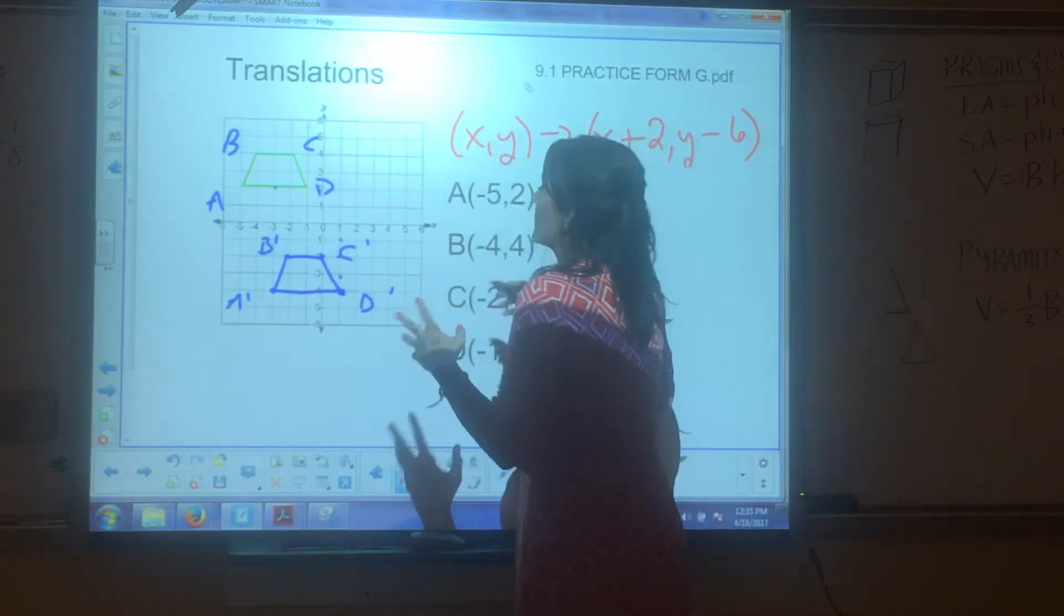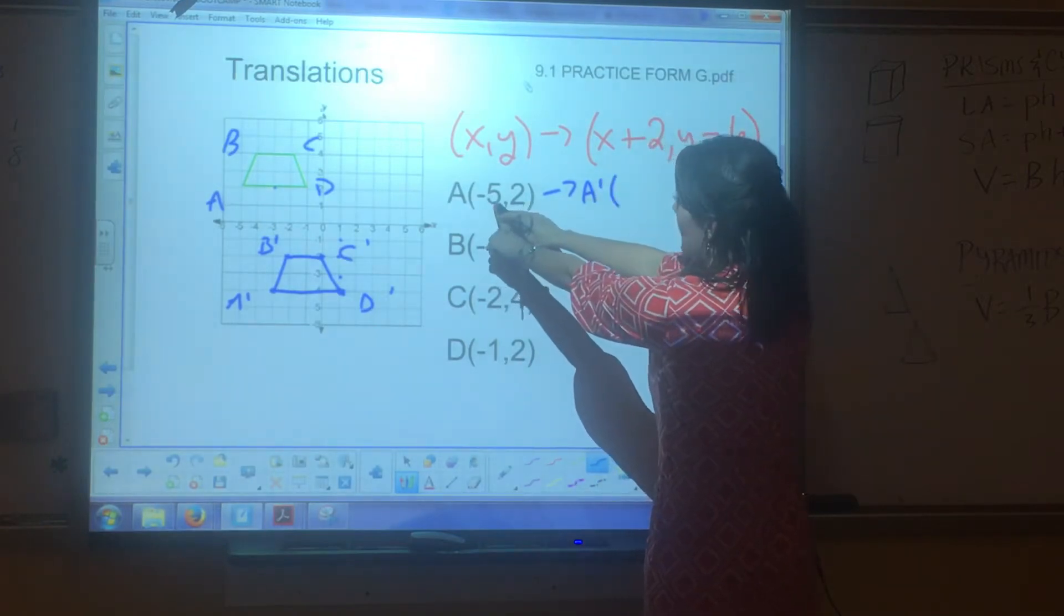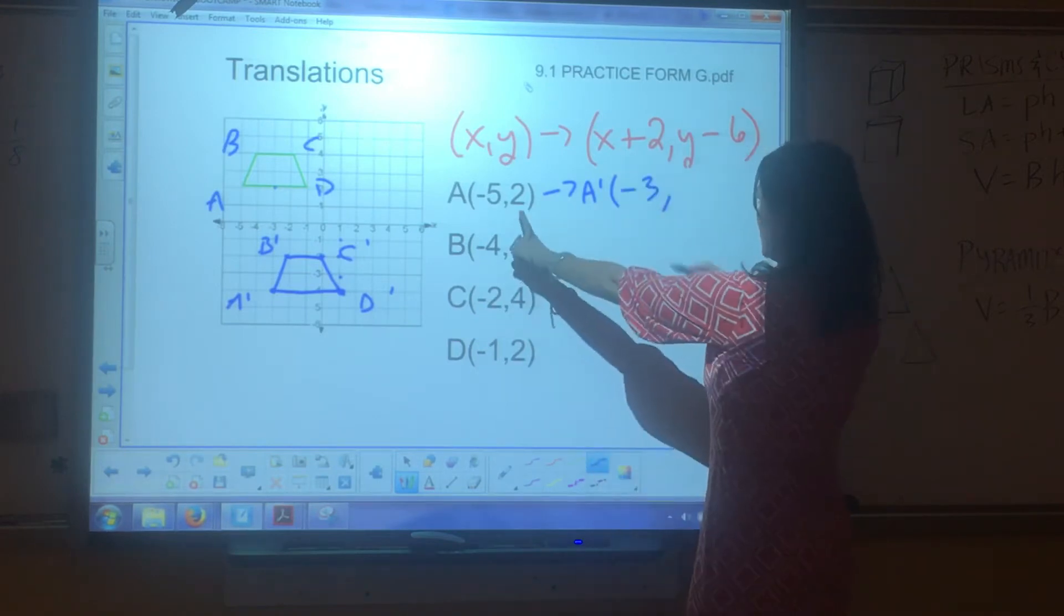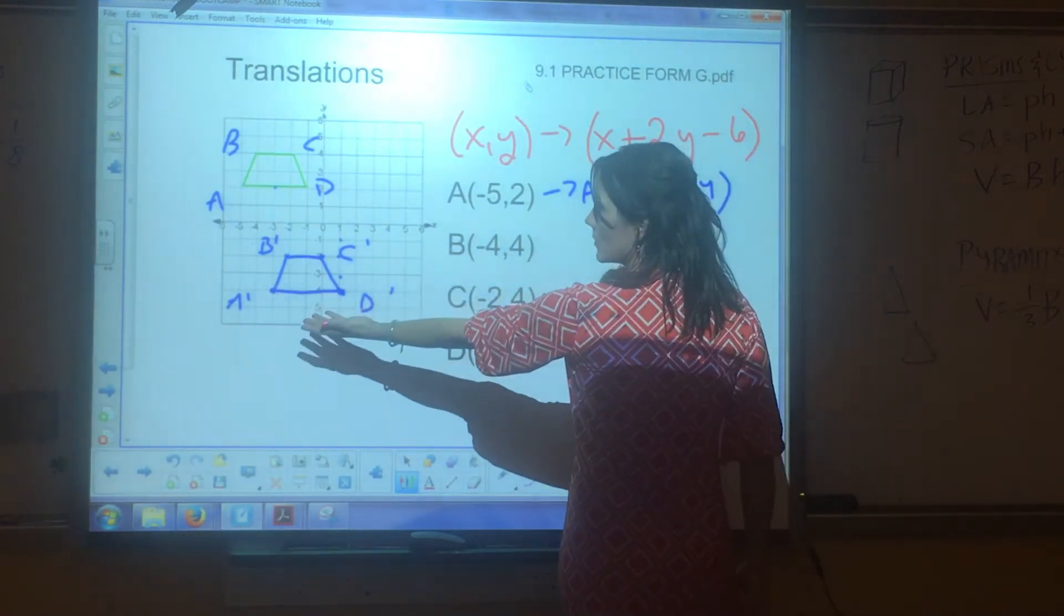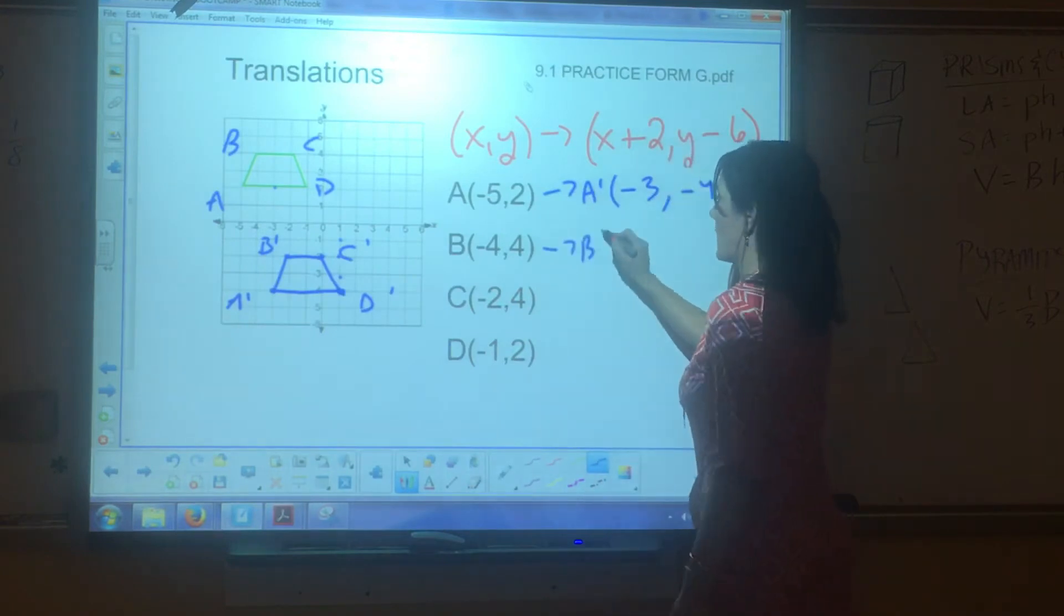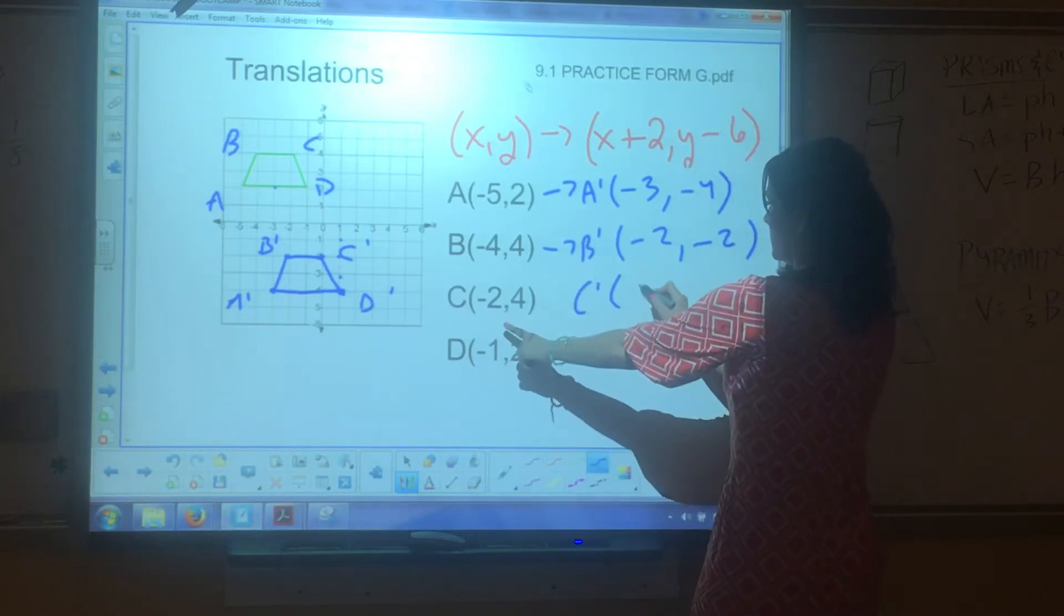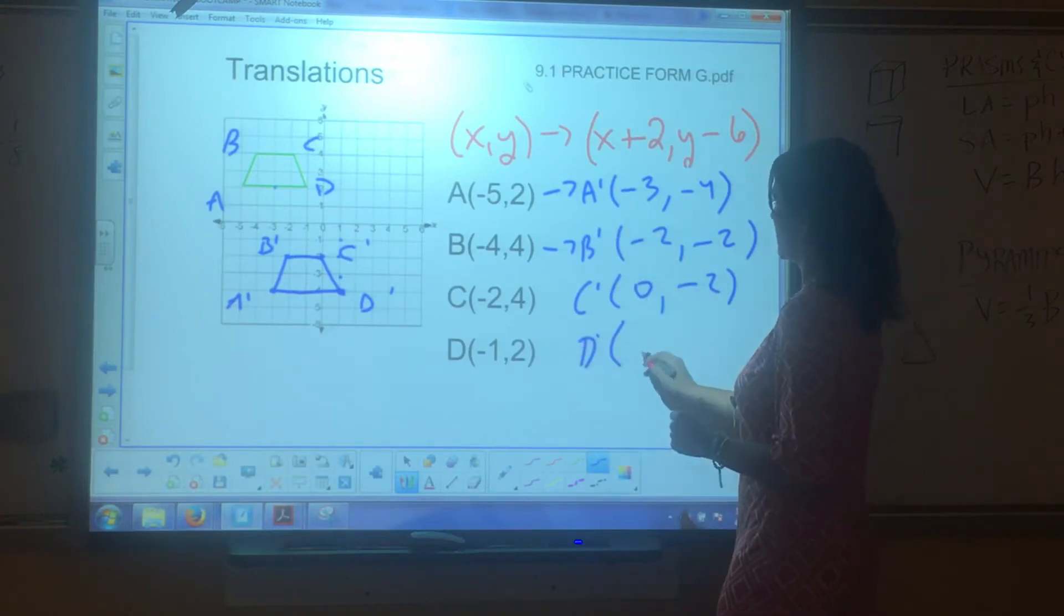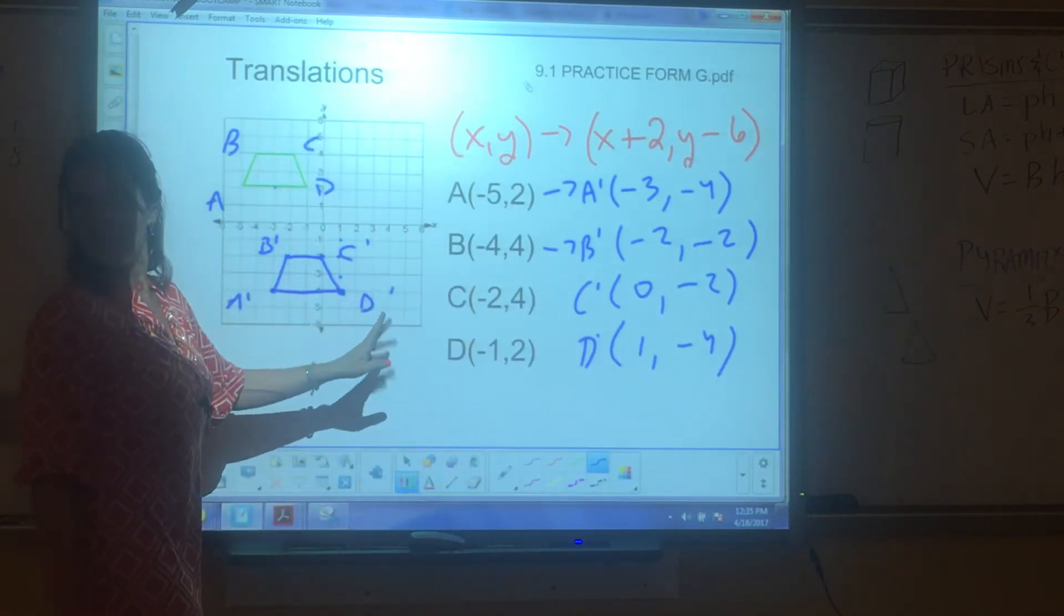Now, if they ask... Actually, let me back up. I just want to show you that we can actually do this mathematically. So, if I look here, these are our X's. Negative 5 plus 2 is what? And then, 2 minus 6? Negative 4. Is that where A prime is? Yes. Yeah. You can do this with all of them mathematically, just so you know. So, this is what? Negative 2. This is what? Zero negative 2. And then, D prime is going to be what? 1 negative 4. That's it. These are easy. All right? These are the fun ones. Well, they're all fun.